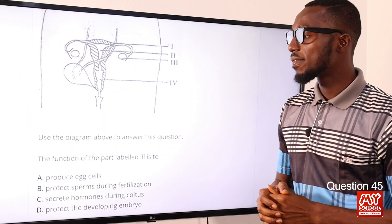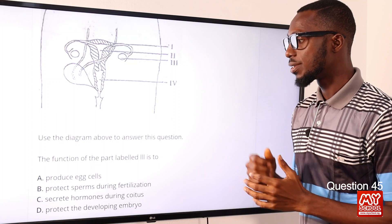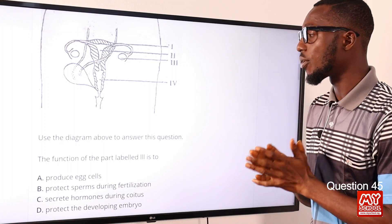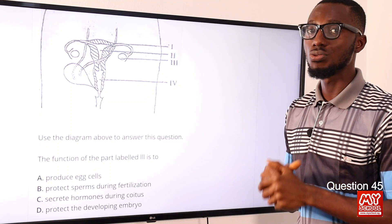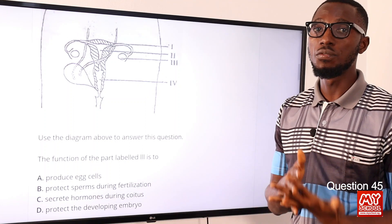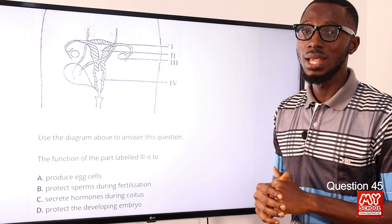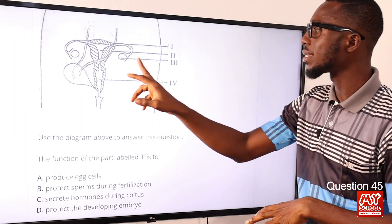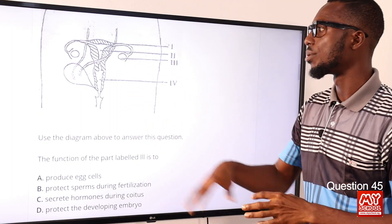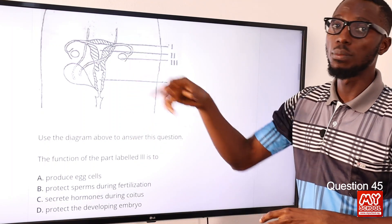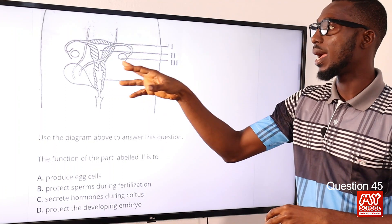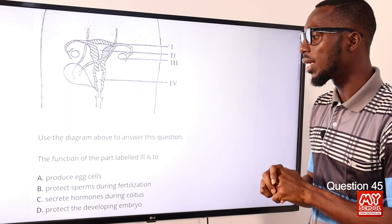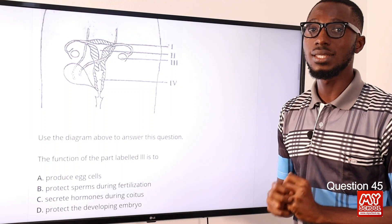Question 45. Use the diagram above to answer this question. The function of the part labeled 3 or II is to produce ova — that is the plural for ovum, meaning egg cells — and also female sex hormones. That is the function of the ovary, so the part labeled II is the ovary. The oviduct or fallopian tube conducts the egg manufactured by the ovary. The correct option is option A: to produce egg cells.